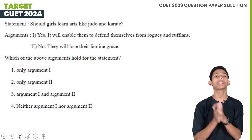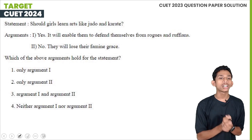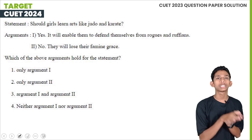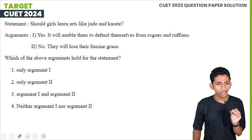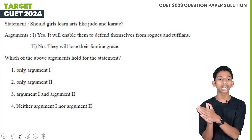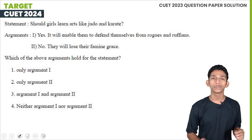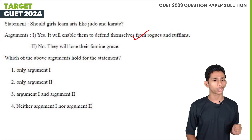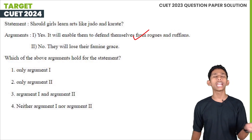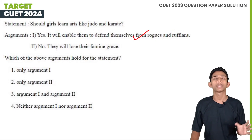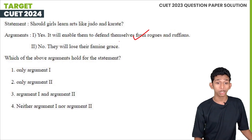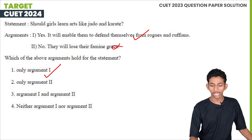Now we have a statement and argument question. Should girls learn arts like Judo and Karate? The first argument is yes — it will enable them to defend themselves from rogues and ruffians. This is a valid argument. The second argument is no — it will affect their feminine grace. That argument is weak. Only argument 1 is strong.